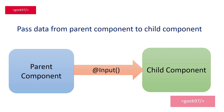When you need to pass data from parent component to child component, you use the input decorator. This means that if there is a property on the child component which is expecting data from the parent component — and that data could be an object, a number, or a string — that property should be decorated with the input decorator so it can receive data from outside, which is the parent component.